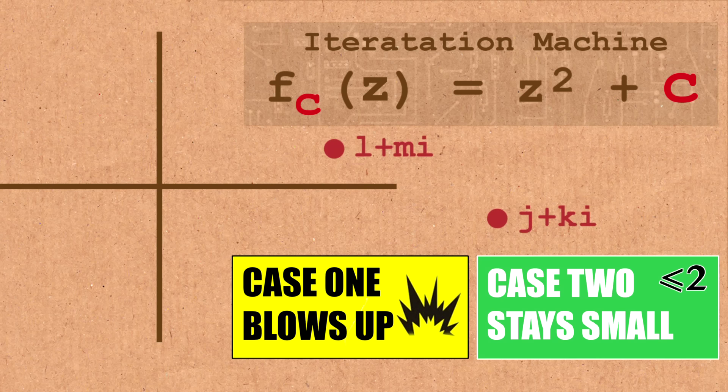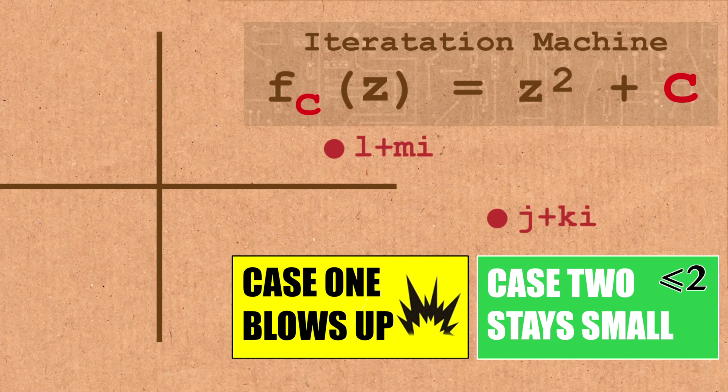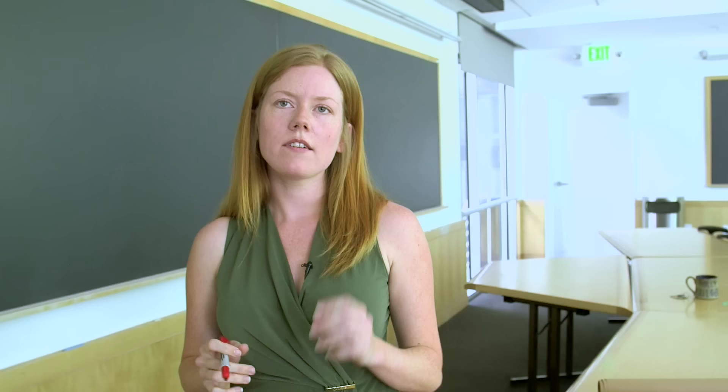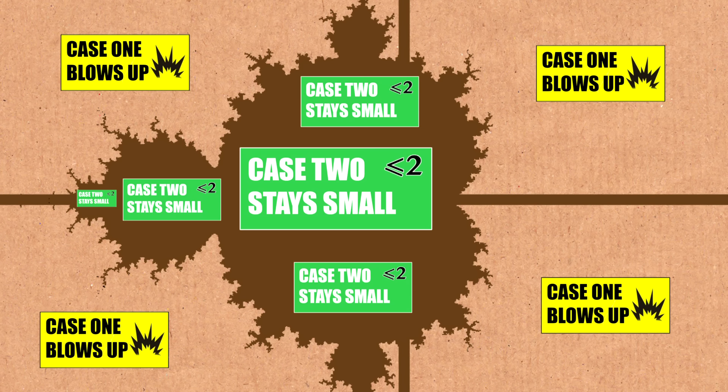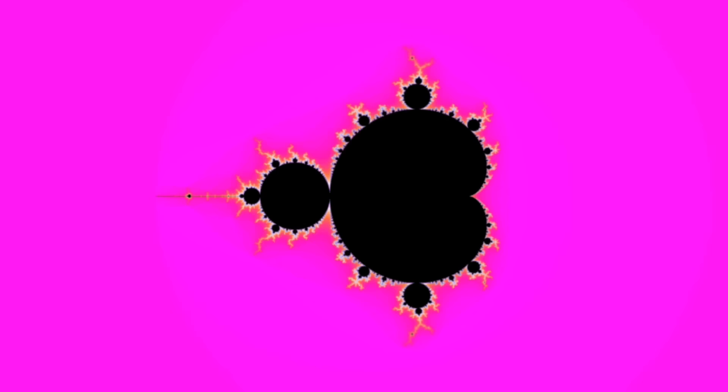If I look at z squared plus C and I start iterating zero under that function, everything remains bounded. It's the guys that don't blow up rather than the ones that do. That's right, it's the guys that don't blow up instead of the ones that do. This is also, in case you're curious, how these pictures are always generated.